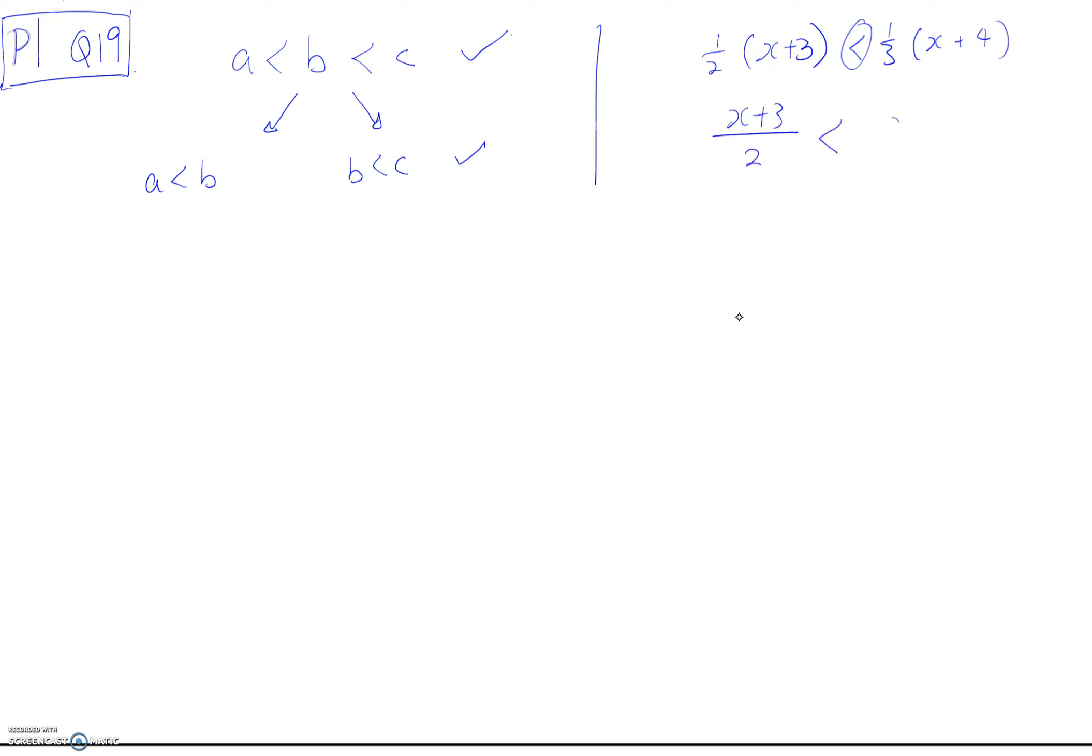Now how to make it the same denominator? We call it the LCM. LCM of 2 and 3, what's the answer? Six. So what I do is I times three times three, this one will times two times two. That's the LCM.